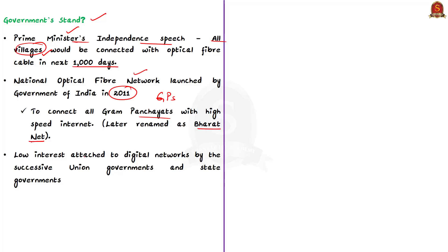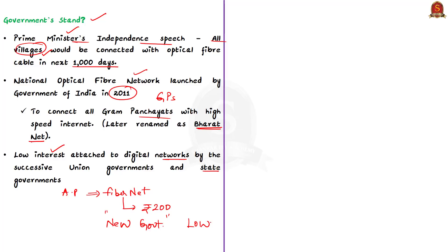However, the envisaged BharatNet project has not gone as planned, due to low interest attached to digital networks by successive union and state governments. For example, a few years back the AP government came up with AP Fibernet to connect all villages with broadband, cable TV and telephone connection at less than ₹200 per month. But after the new government was elected last year, the progress of AP Fibernet has been very low-paced. So neither the broadband policy nor BharatNet has yielded expected results.